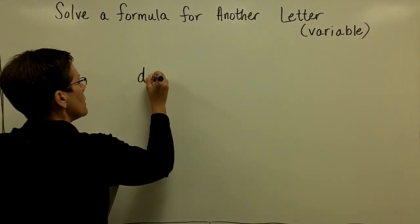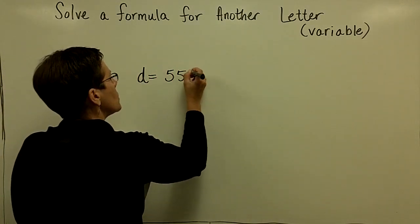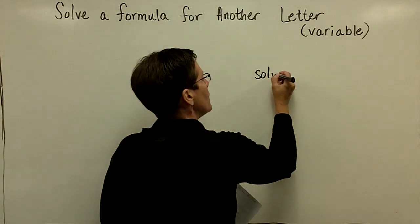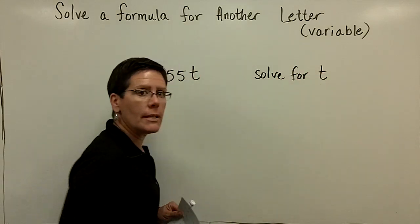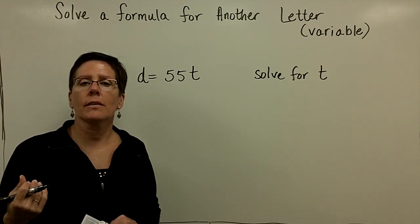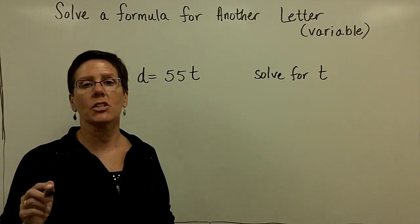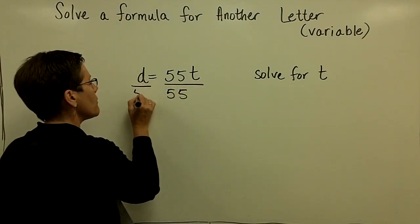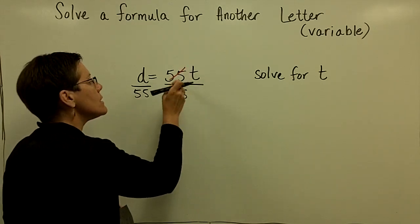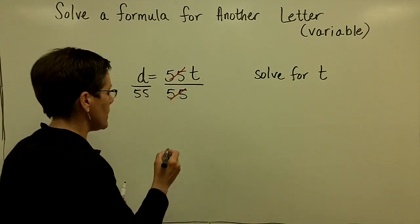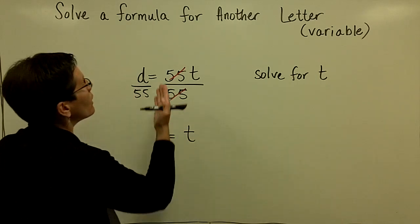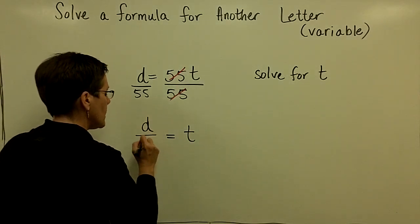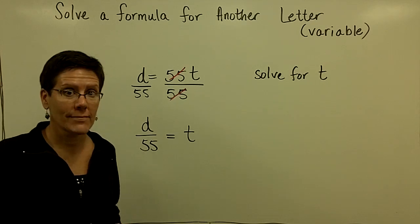Here's the first problem I'd like to demonstrate: d equals 55 times t. Two letters in this problem. I'd like to solve for the letter t. Because I have just one term on the left and one term on the right, I turn immediately to the multiplication principle. I divide both sides by 55 in order to get t all by itself, to make that become a 1t. I have isolated the variable t, or I've solved for another letter or variable that is the letter t. It is equal to d divided by 55. That's it.